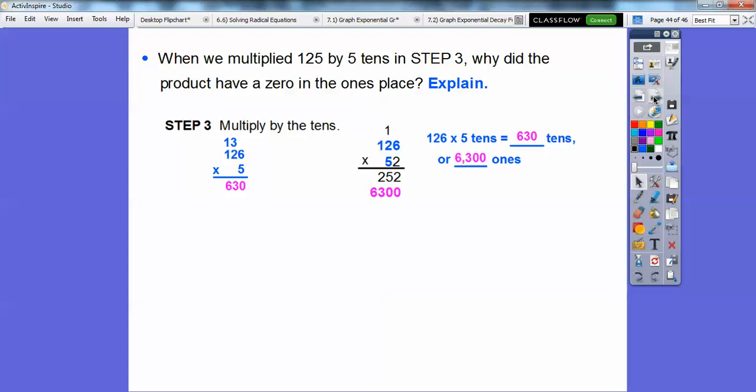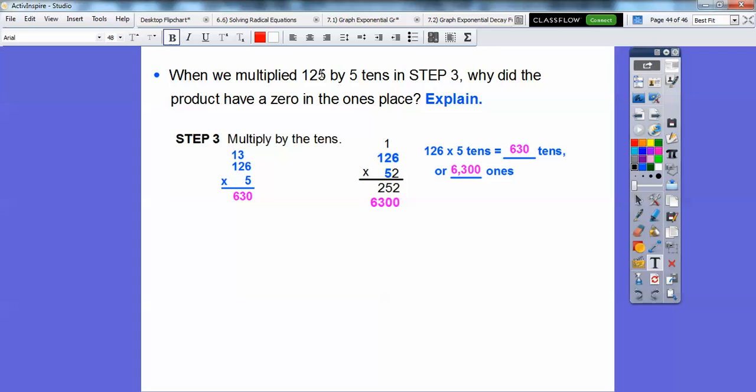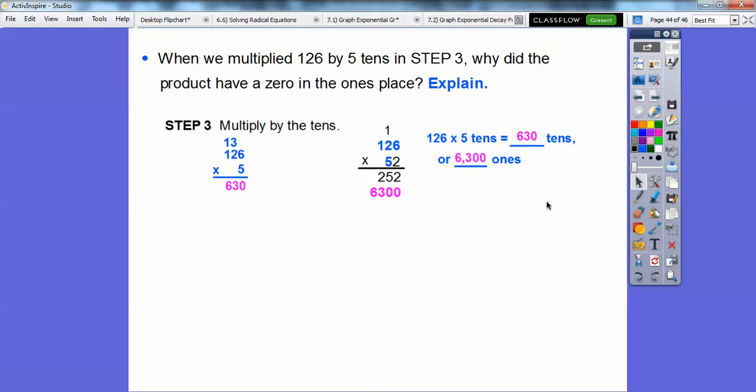When we multiplied the 126 by the 5 tens in step 3, we multiplied right here. Actually, this should say 126 right there. Sorry, you guys. That should say 126. I was wondering what I was doing. Let me change that real quick. 126. So when we multiplied that by the 5 tens right there, why did the product have a 0 in the ones place?